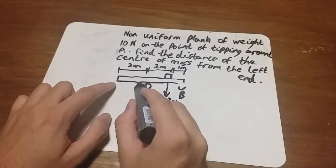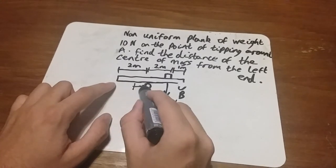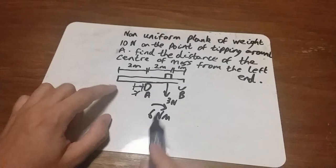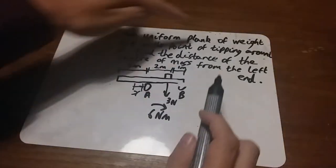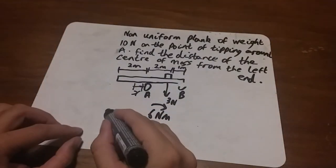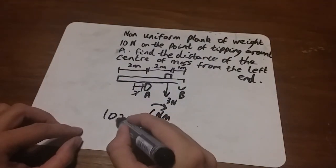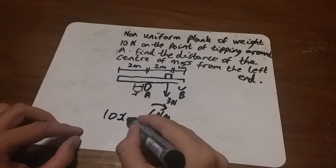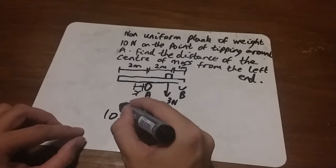For the moment going the other way, let's call the distance x. We know the weight of the plank is 10 newtons. So the total moment here would be 10x newton meters going around that way.